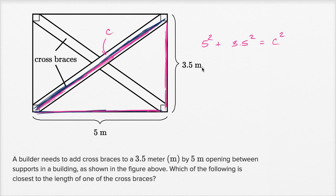Now 5 squared is pretty straightforward, that's going to be 25. Now 3.5 squared, let's see, 3.5 times 3.5.